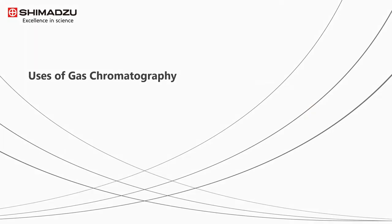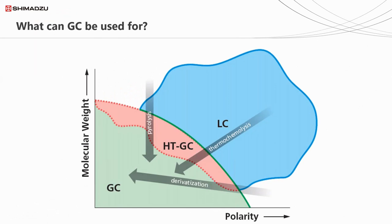Gas chromatography is incredibly useful, with literally thousands of applications analyzing a host of different chemical groups and mixes. Having said that, it's not the ultimate form of chromatography, and there are some cases where GC might not be appropriate. Typically speaking, GC is suitable for analyzing molecules with low molecular weight and relatively low polarity - in other words, molecules that are not too big and have a low boiling point. The reason for this is that in order to use GC, we have to vaporize our sample - it has to be turned from a liquid into a gas vapor.